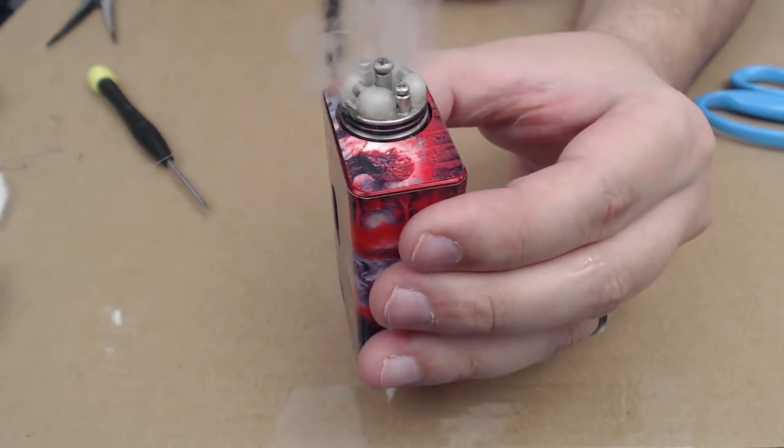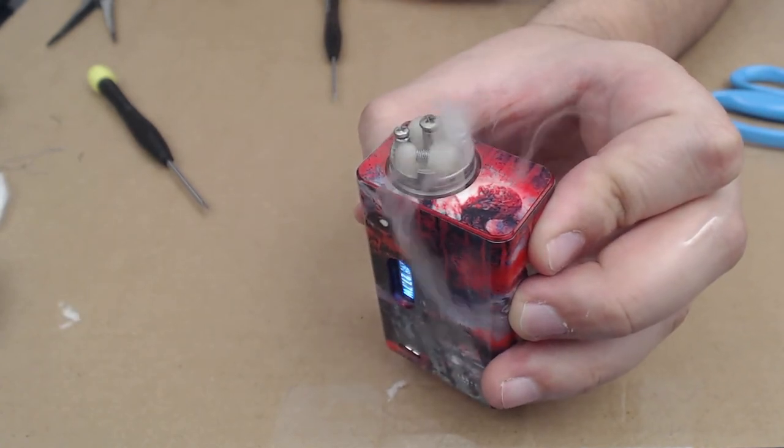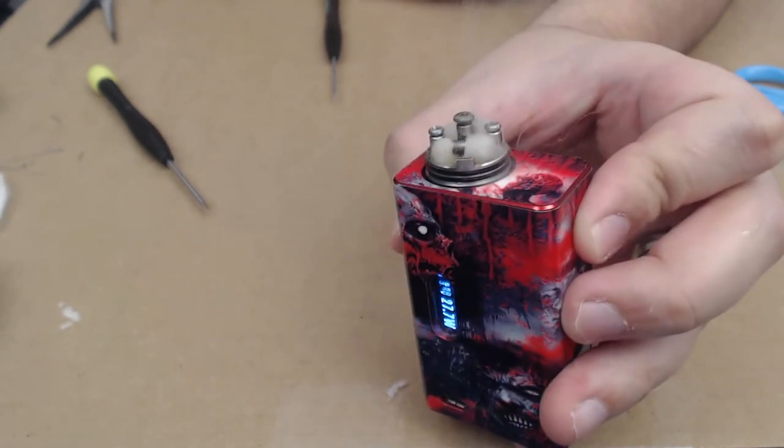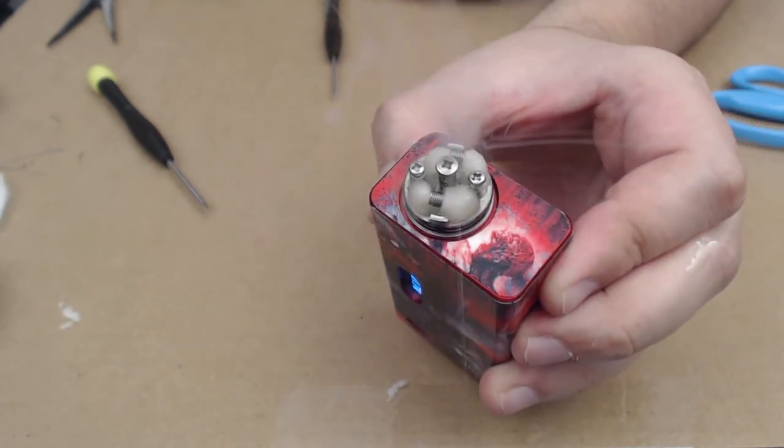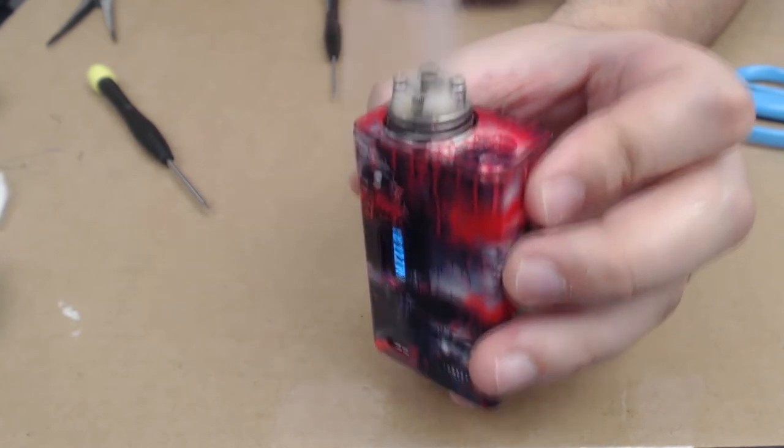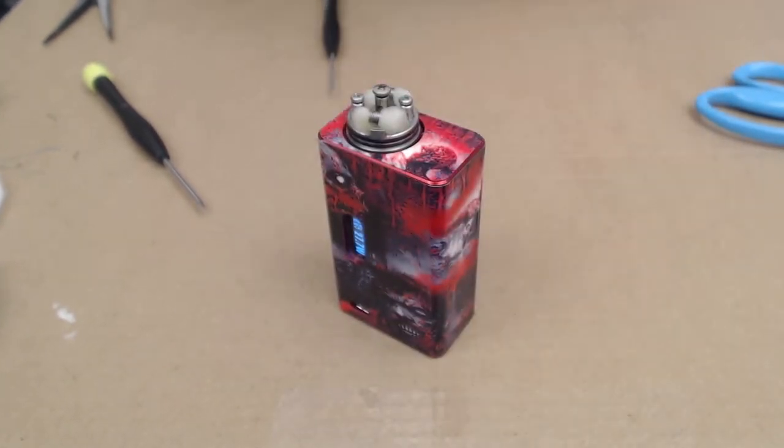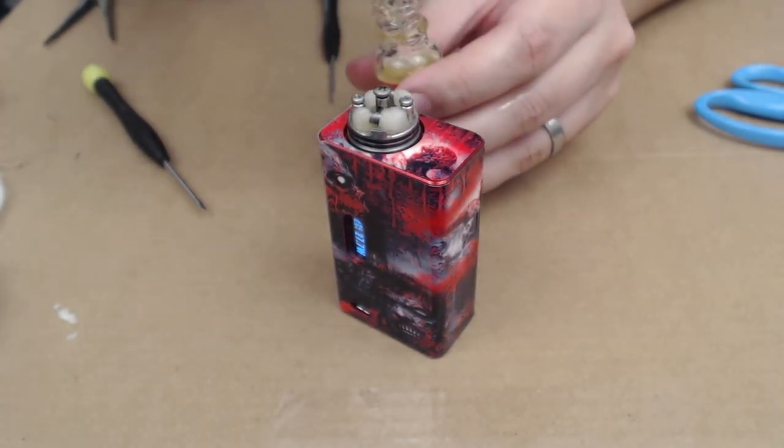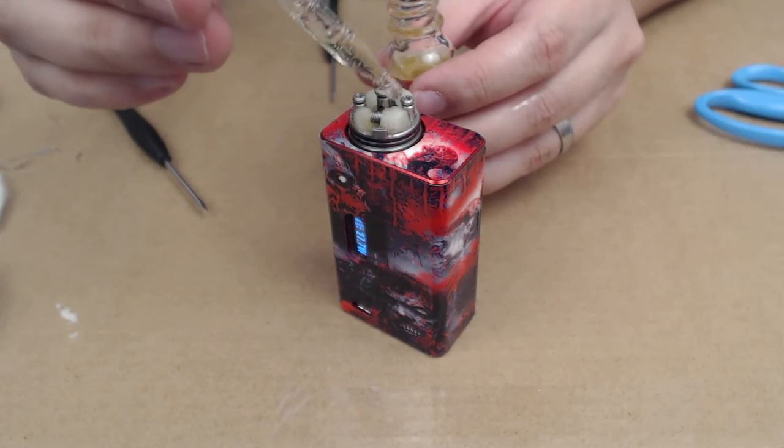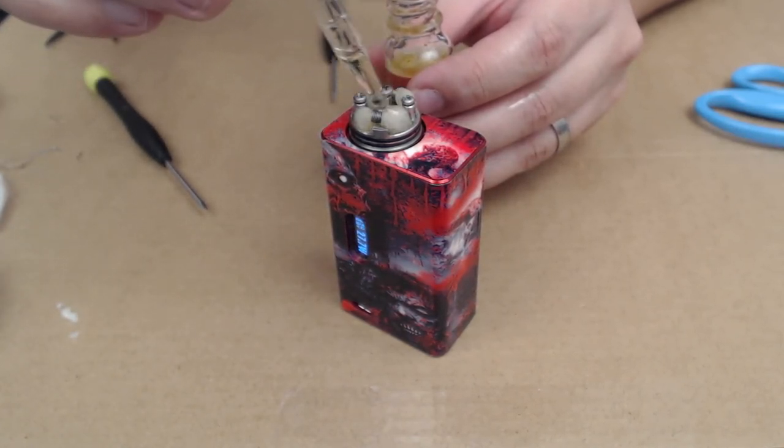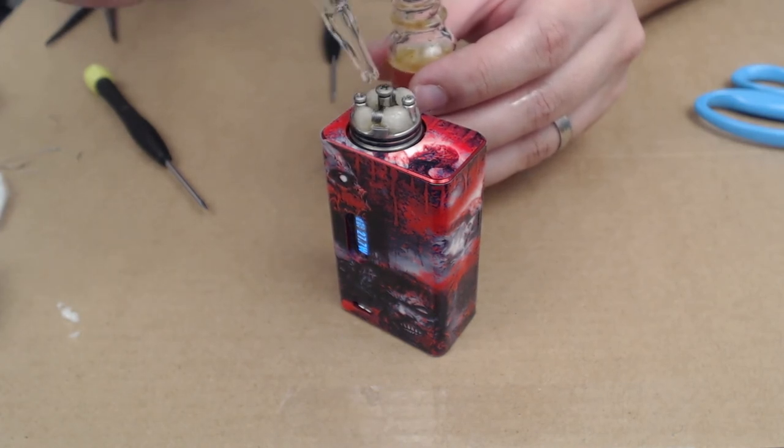So once you soak it up like that to where it's all nice and wet, you are going to want to, just like when you've got a starter kit guys, let it sit for a little bit. So we're just going to let it sit for 20 seconds or something, just so that it really starts absorbing. Alright, so now that it's kind of soaked in, I would usually put it on an ohm reader again, especially using it on a mech mod. So I'm putting it back on here so we can verify that the ohms are good, there's no short or nothing.